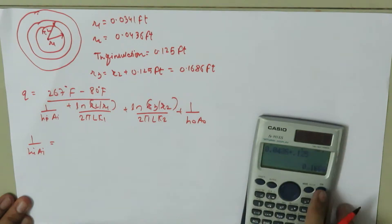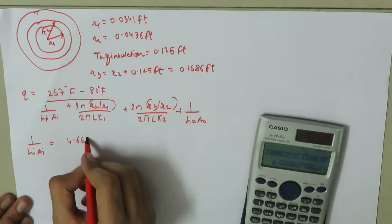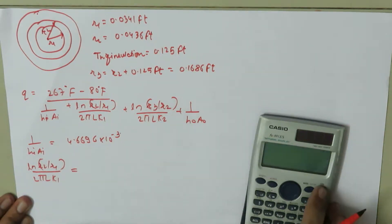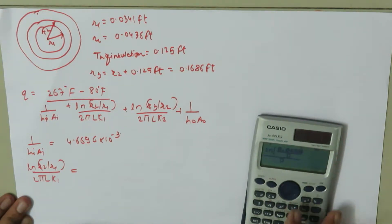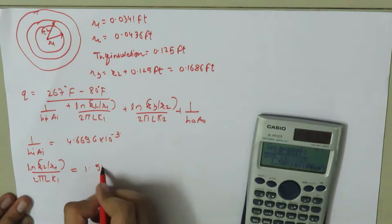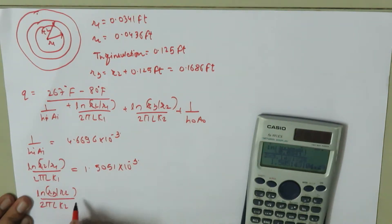The first resistance: 1/(hi·Ai) = 1/(1000 × 2π × 0.0341 × 1) = 4.6696 × 10⁻³. The second resistance: ln(r2/r1)/(2π·L·k1) = ln(0.0436/0.0341) / (2π × 1 × 26) = 1.5051 × 10⁻³.